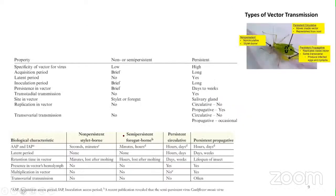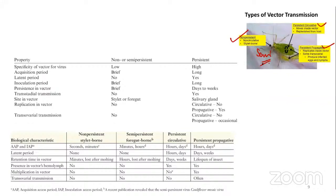Vector transmission can be categorized as non-persistent, semi-persistent, or persistent. Within persistent, it can be circulative-propagative or transovarial.